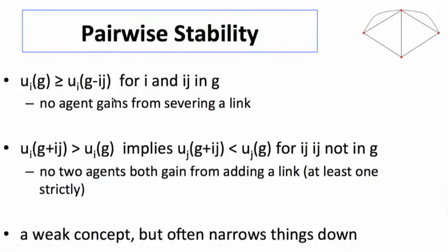We'll say that the network G is pairwise stable if the utility of i for any link that they're involved in is greater than or equal to what they would get from deleting the link. If it was less, they should have deleted it. So for G to be stable, it should be that they get at least as much as they would get from deleting any of the links that they're in. Nobody gains from severing the link.